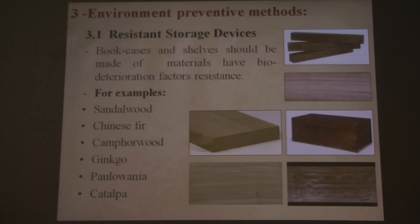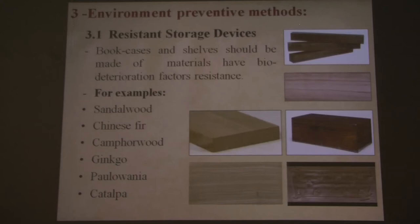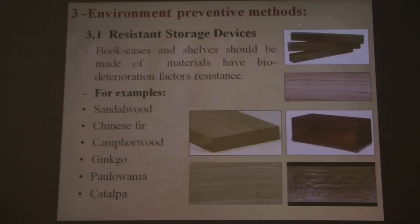Regarding resistant storage devices, there are recommendations for making bookcases and shelves from materials that have resistance to bio-deterioration factors. For example, using sandalwood, Chinese fir, camphor wood, gamboge, Paulownia wood, and catalpa wood. All these materials have aromatic substances that prevent insects from attacking papers or any documents you keep inside them.